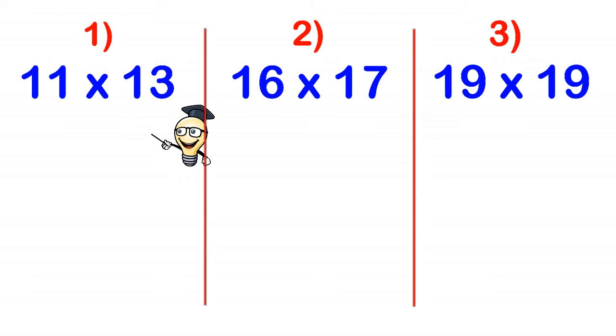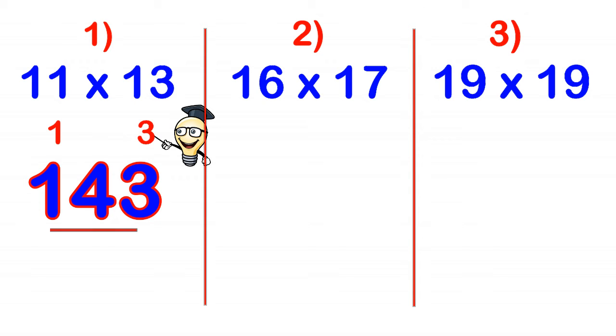Number 1, 11 times 13. So first of all, we find the distances away from 10. So 11 is 1 away from 10 and 13 is 3 away from 10. Adding diagonally either way, 11 plus 3 gives us 14. Same as 13 plus 1. And then multiplying these distances, 1 times 3 is 3. So the answer is 143.